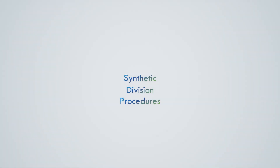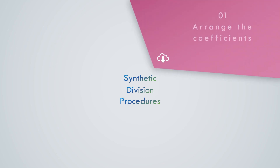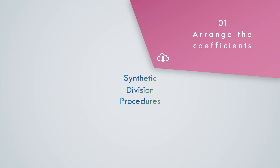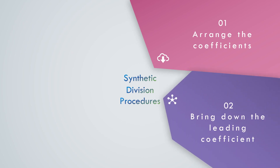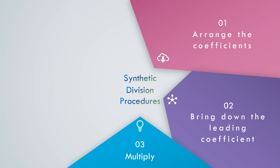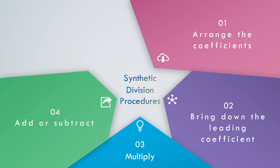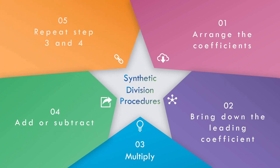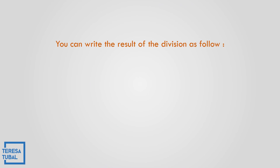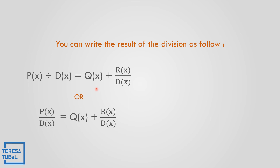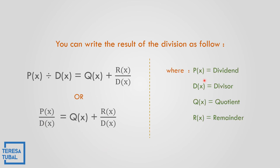What are the steps in dividing polynomials using synthetic division? First, arrange the coefficients from highest exponent to lowest exponent. Second, bring down the leading coefficient. Third, multiply. Fourth, add or subtract. Then repeat steps 3 and 4. The result is written as Q(x) plus R(x) over D(x), where P(x) is the dividend, D(x) is the divisor, Q(x) is the quotient, and R(x) is the remainder.